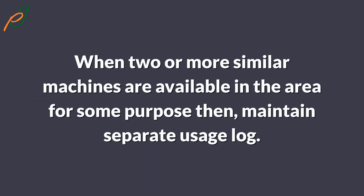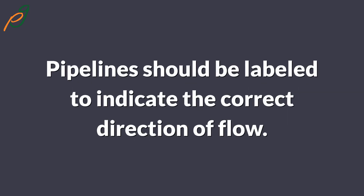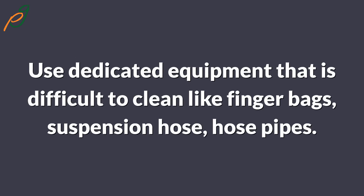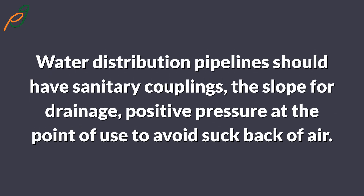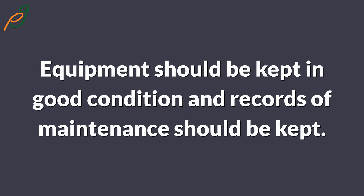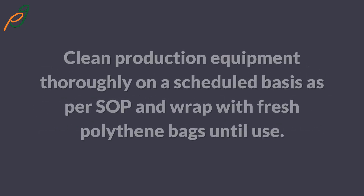When two or more similar machines are available in an area for the same purpose, maintain a separate usage log. Pipelines should be labeled to indicate the correct direction of flow. Use dedicated equipment that is difficult to clean, such as finger bags, suspension hoses, and hose pipes. Water distribution pipelines should have sanitary couplings, with correct slope for drainage and positive pressure at the point of use to avoid suck-back of air.